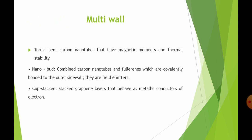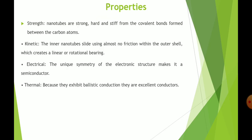Multi wall nanotubes have carbon nanotubes with magnetic moments and thermal stability. They combine carbon nanotubes and fullerenes which are covalently bonded to the outer side wall. They are field emitters and consist of stacked graphene layers that behave as metallic conductors of electrons.